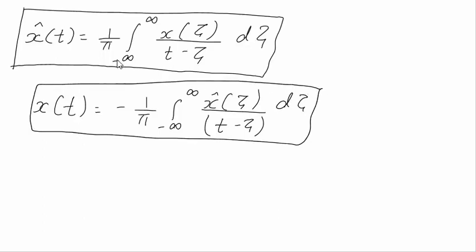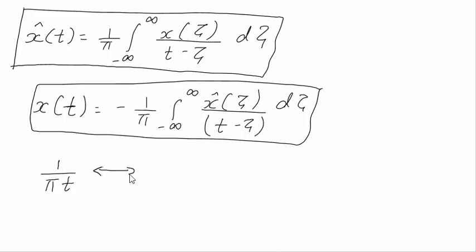To repeat: x̂(t) is given by that integral expression, where x̂(t) is the Hilbert transform of x(t). If you derive from x̂(t) back to x(t), you get a minus sign. One more very important relation: the Hilbert transform pair of (1/πt) is −j·sgn(f).